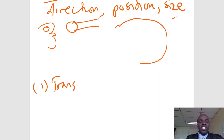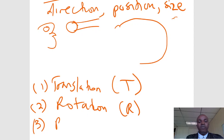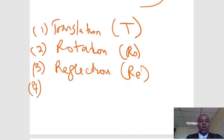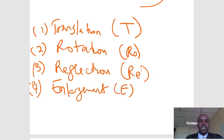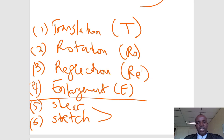Number one, we have translation (T). Number two, rotation (R). Number three, reflection (Re). Number four, enlargement (E). Number five, shear. And number six, stretch. These are the different types of transformations. For Cambridge syllabus students, it covers the first four.